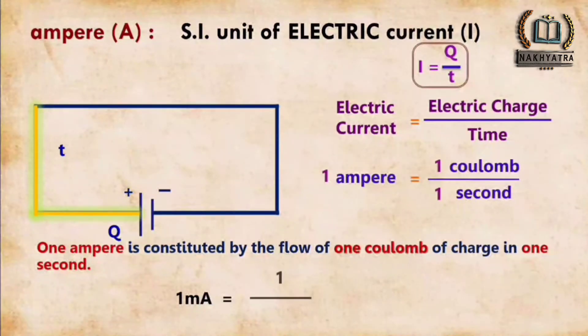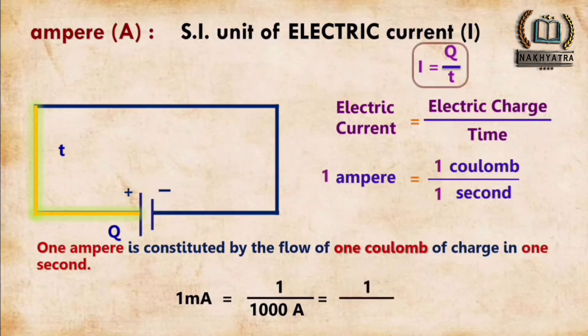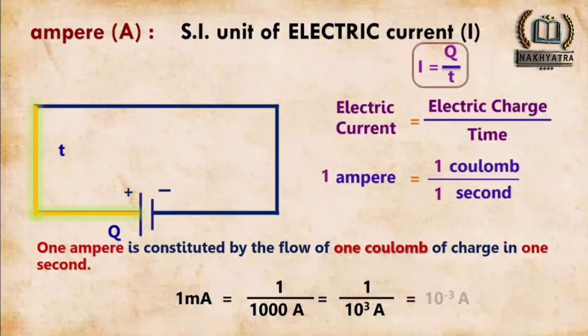For one milliampere: 1 mA = 1/1000 ampere = 1/10³ A = 10⁻³ A, which means 10⁻³ ampere.